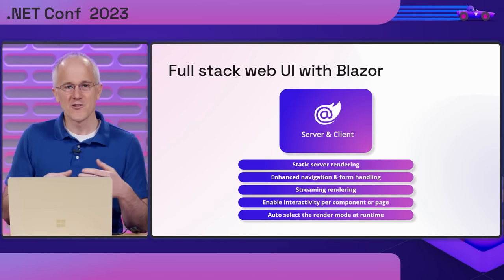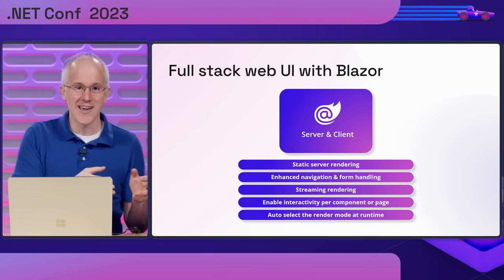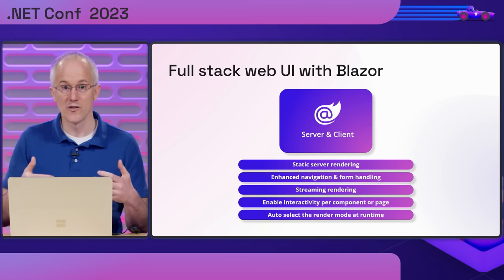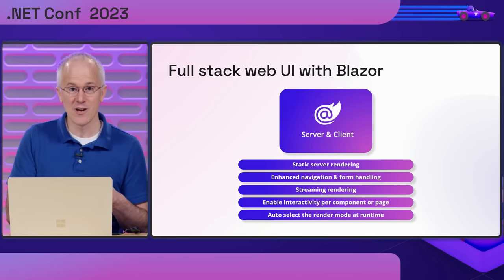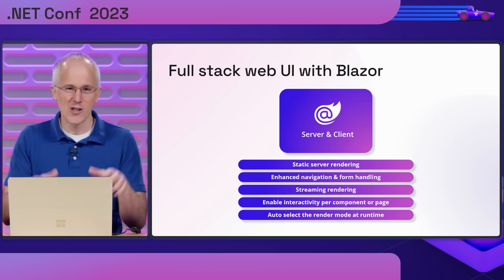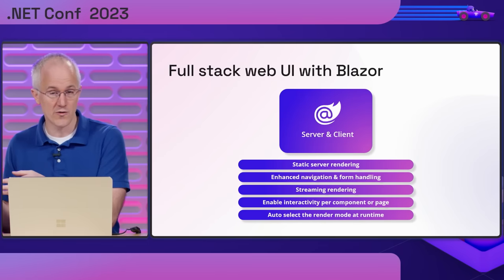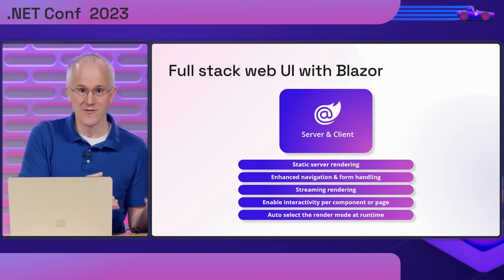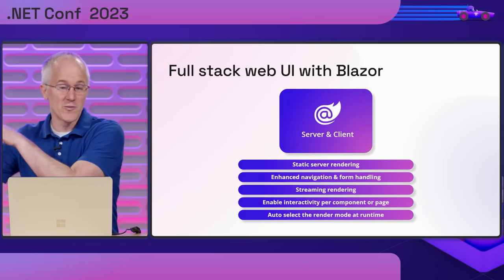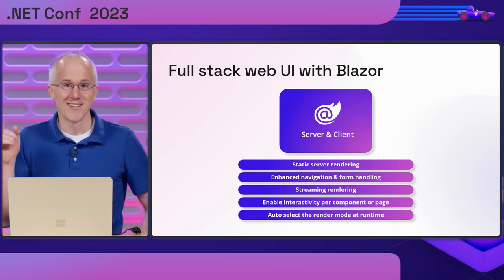Blazor in .NET 8 is no longer just a client-side web UI framework. Blazor now has smart web UI rendering that leverages the capabilities of both the server and the client — it's full-stack web UI. Blazor now has advanced server-side rendering capabilities including static server-side rendering, enhanced navigation and form handling, and streaming rendering, so you can optimize page load time and really polish the user experience. You can add interactivity for your components wherever needed, either from the server using Blazor Server or from the client via Blazor WebAssembly, and you can even use both together in the same app.